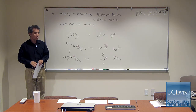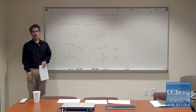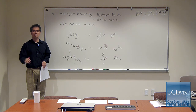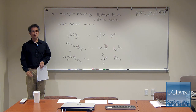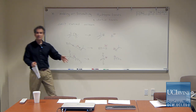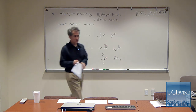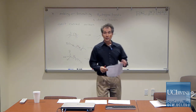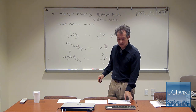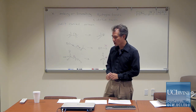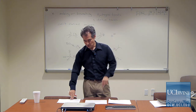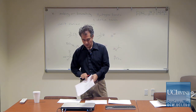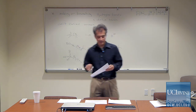Rule number one in general: draw correct Lewis structures — not hydrogen bonds, not dative bonds. Draw the lone pairs. Draw every hydrogen atom on everything except carbon, and put in all the charges on those Lewis structures.